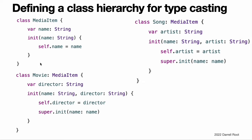The next snippet defines two subclasses of MediaItem. The first subclass, Movie, encapsulates additional information about a movie or film. It adds a director property on top of the base MediaItem class with a corresponding initializer. The second subclass, Song, adds an artist property and initializer on top of the base class.